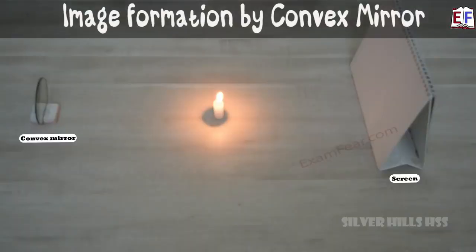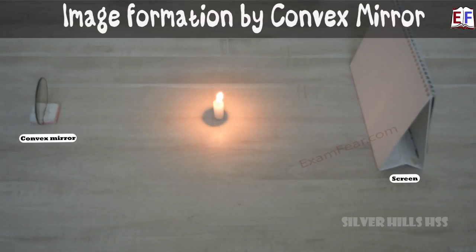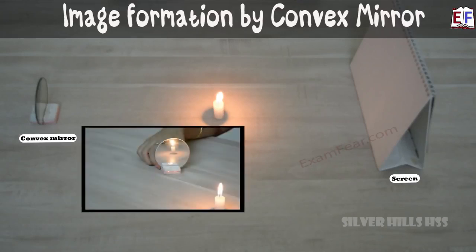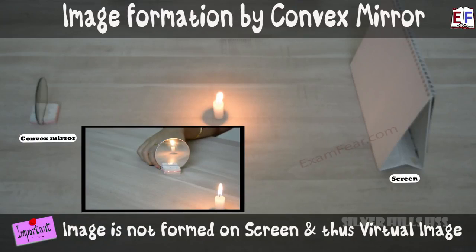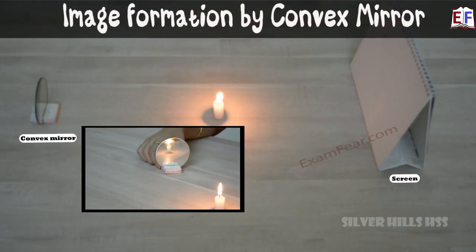When we place the convex mirror, it is a diverging mirror and this time we do not see any image on the screen. Does that mean no image is formed? No — we still see an image on the mirror itself: a diminished erect image. But we cannot get it on the screen because this is a virtual erect image, and virtual images are never obtained on a screen.